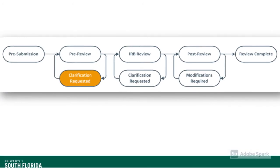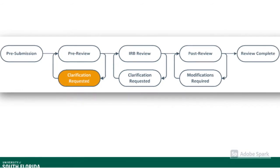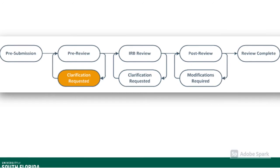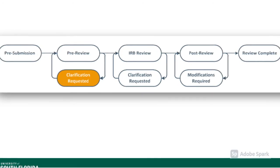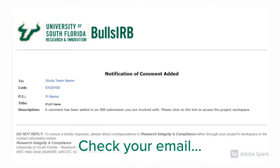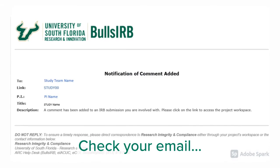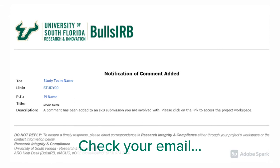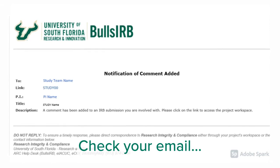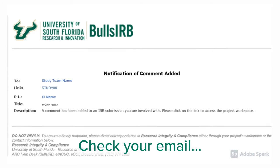If the RCA has edits, comments, or requests clarifications to your study or associated study documents, your study will move to the clarification requested phase. You will receive an email from Bulls IRB letting you know that the study team needs to take action on the application. You should click on the link provided in the email to navigate to the study workspace in Bulls IRB. You can review the RCA's comments in the study history and click into the actual Bulls IRB application to make any requested changes to the application or study documents.